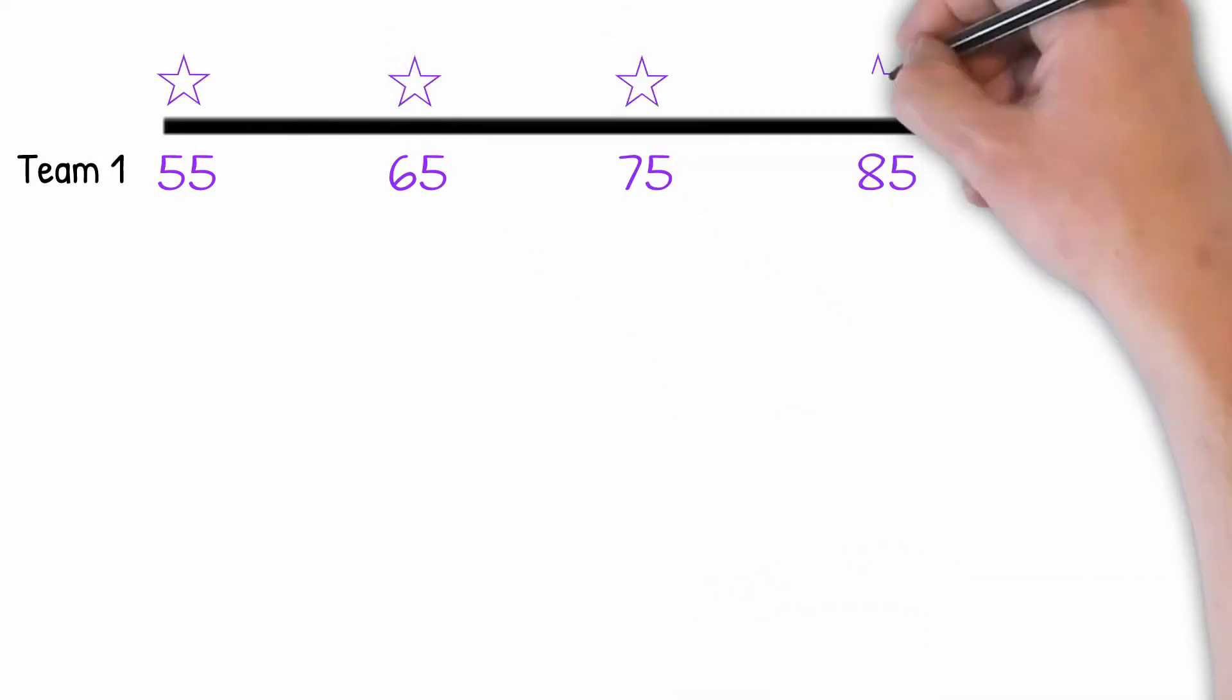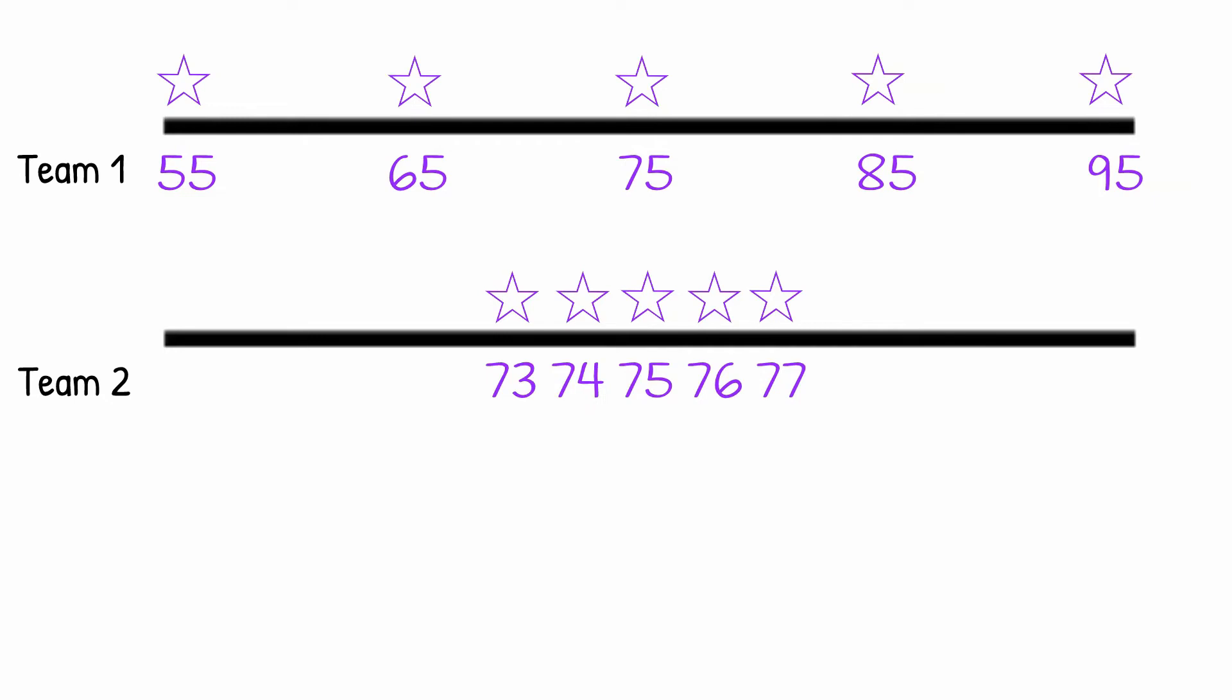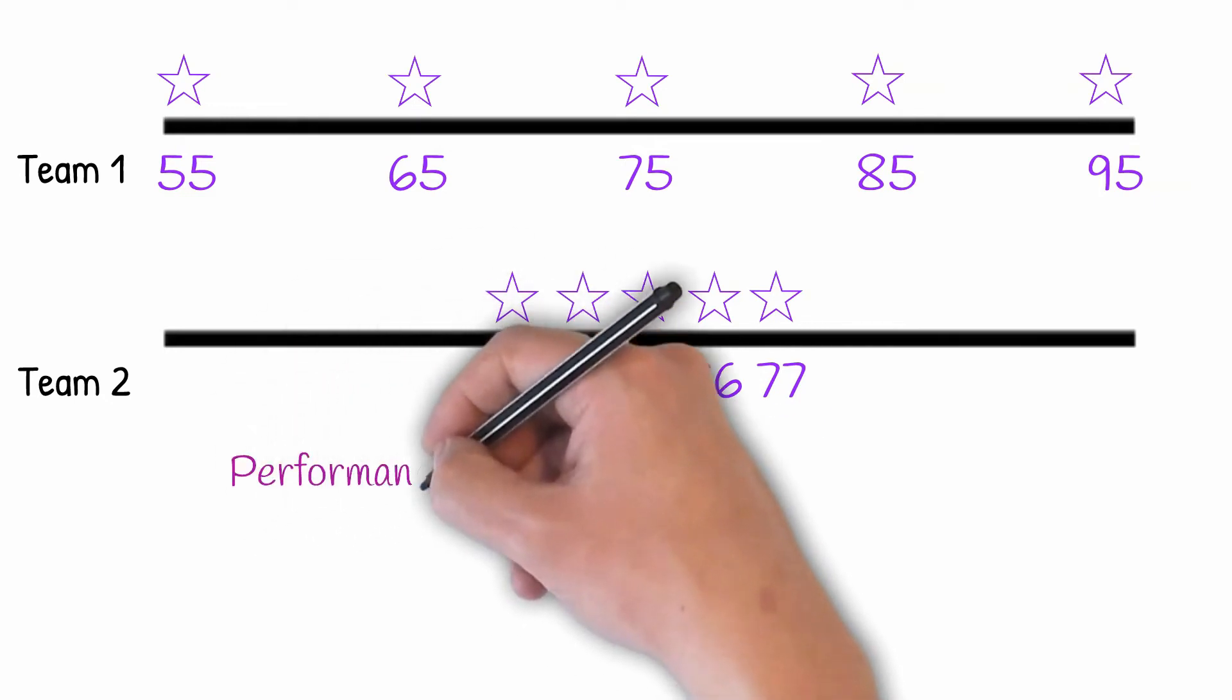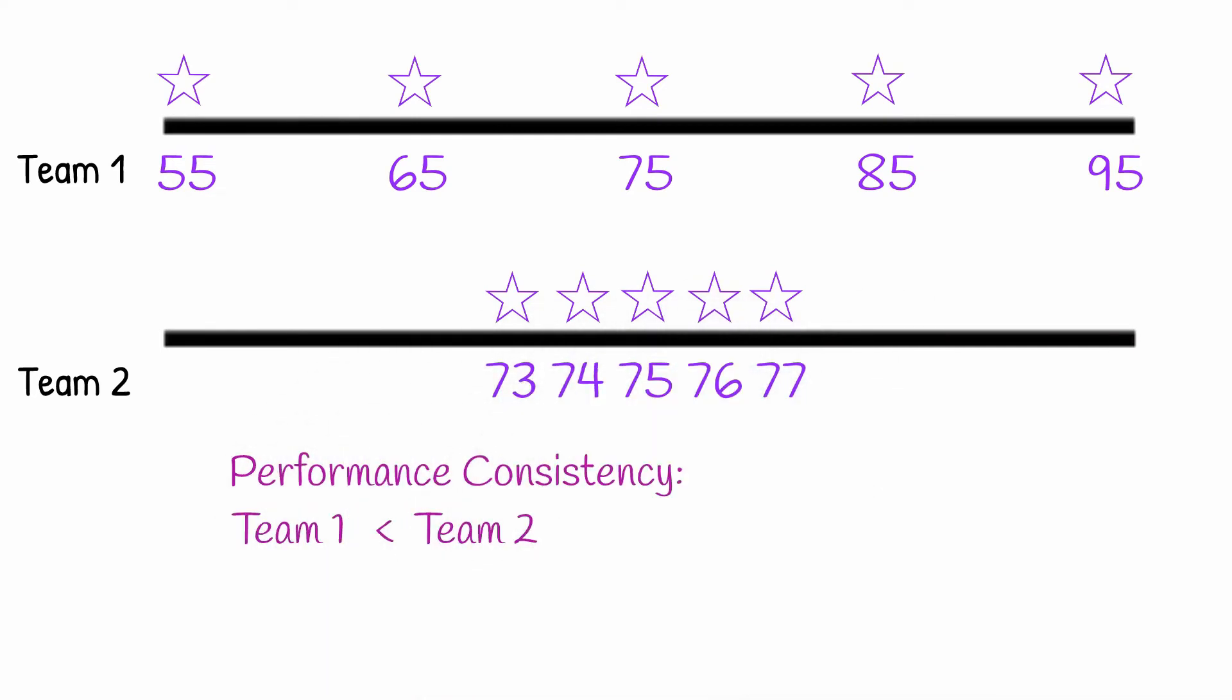In other words, they will tell you how much close to the average was their performance. It indicates on average the consistency in performance of Team 1 versus Team 2. So we see that Team 1 is less consistent in performance compared with Team 2.